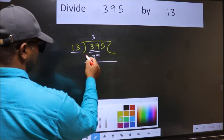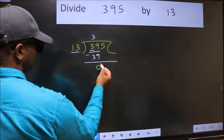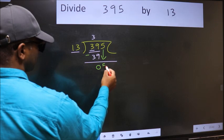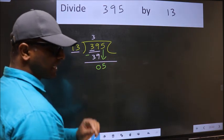Now we subtract. 39 minus 39 equals 0. After this, you bring down the next number. So bring 5 down. After this step, the mistake happens.